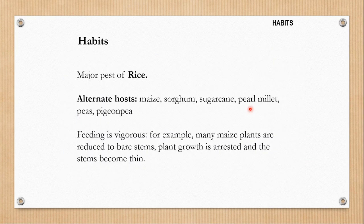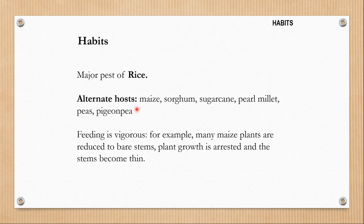Let's learn about its habits. It is a major pest of rice but it also attacks maize, sorghum, sugarcane, pearl millet, peas, pigeon peas, etc. So if rice is not available, then it can survive on any of these host plants.